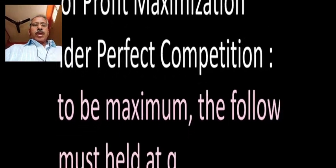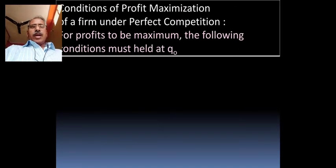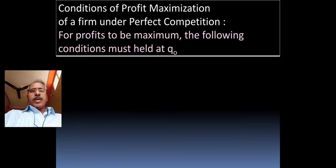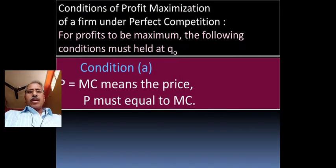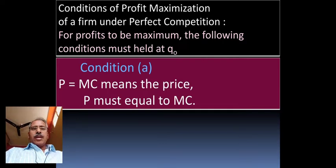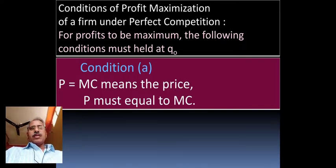We shall move on to the conditions of profit maximization at Q0. See condition A. In condition A, P equals MC means the price P must equal to marginal cost. P is the price or market price, MC is marginal cost.